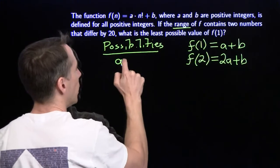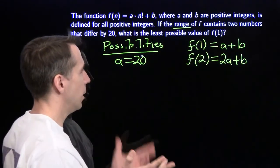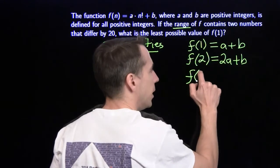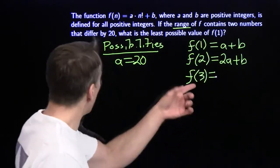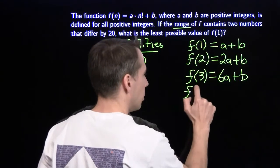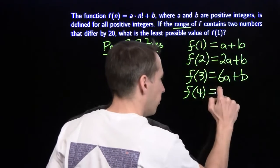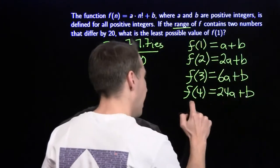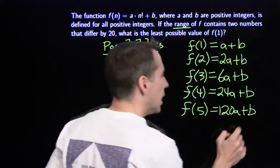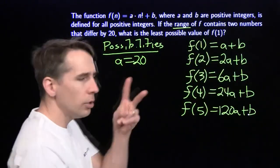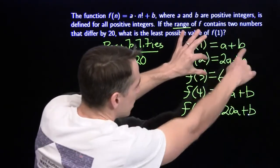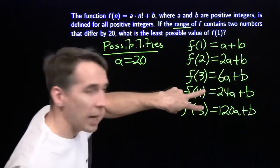Continuing: f(3) = 6a+b (since 3!=6), f(4) = 24a+b (since 4!=24), f(5) = 120a+b (since 5!=120). f(1) and f(3) differ by 5a; f(2) and f(3) differ by 4a; f(4) and f(5) differ by 96a. Since a must be a positive integer, f(4) and f(5) already differ by at least 96.